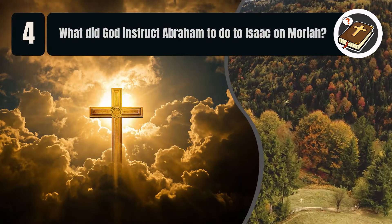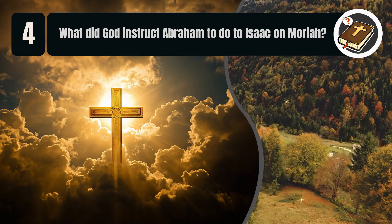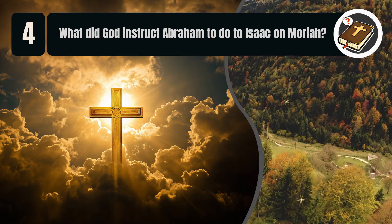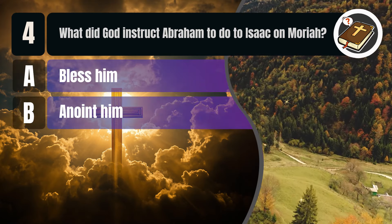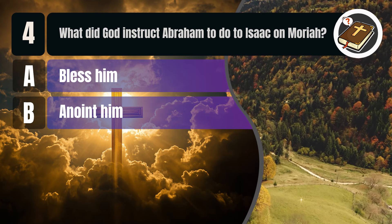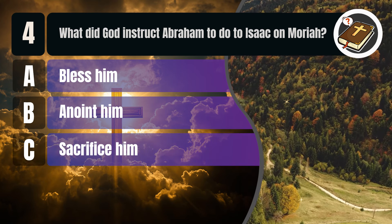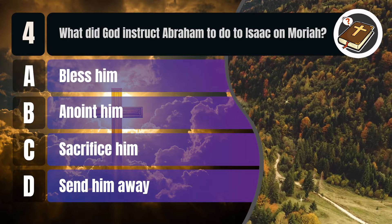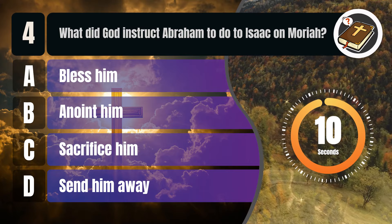Question 4. What did God instruct Abraham to do to Isaac on Moriah? A. Bless him. B. Anoint him. C. Sacrifice him. D. Send him away.